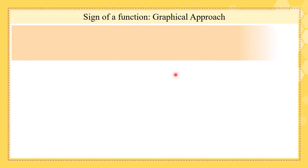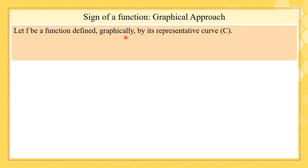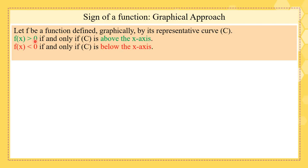We need to find the sign of a function, and let's see it graphically. f is a function defined graphically by its representative curve C. We can state that f(x) is greater than 0 if and only if C is above the x-axis, because C is the representative curve of f and the x-axis is the representative curve of y equals 0. And f(x) is less than 0 if and only if C is below the x-axis. And f(x) equals 0 if and only if C cuts the x-axis. So it's similar to the relative positions of two curves, but here we have a curve and the x-axis.